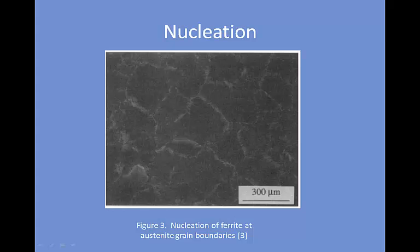Nucleation is the beginning step for the transformation from one phase to another, and it relies on a concept called undercooling. In order to transform, the material must overcome an activation energy barrier. This is done via undercooling, or by cooling the material past the transformation temperature. The cooler the temperature, the farther from equilibrium the original phase will be. Nucleation will begin once a certain amount of undercooling is reached and a new phase becomes thermodynamically favored.